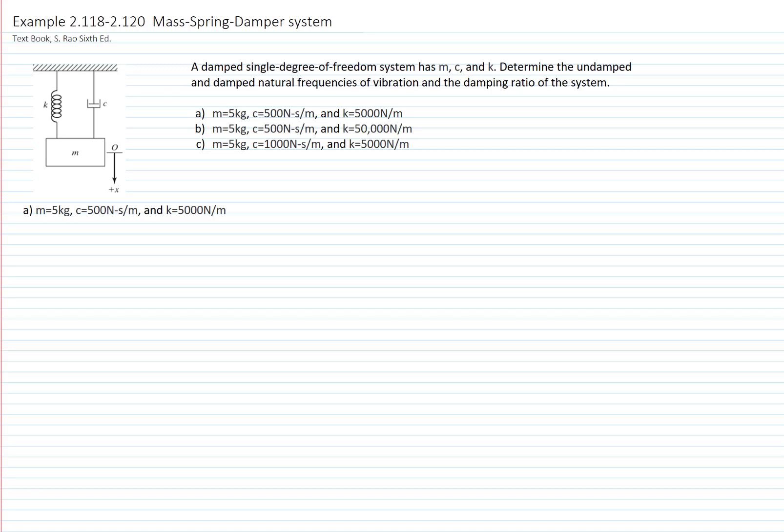In this example, I will solve problems 2.118, 2.119, and 2.120 of our textbook RAU. We have a damped single degree of freedom system where m, c, and k are given, and we would like to determine the undamped and damped natural frequency of vibration and the damping ratio.